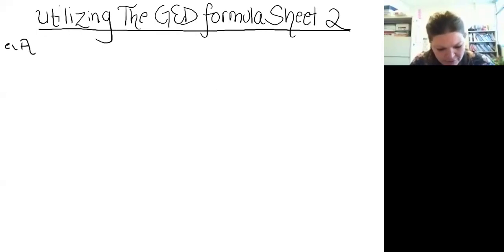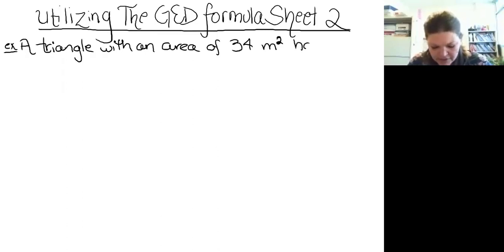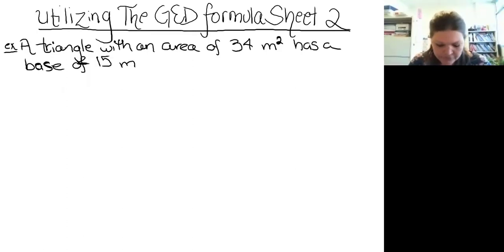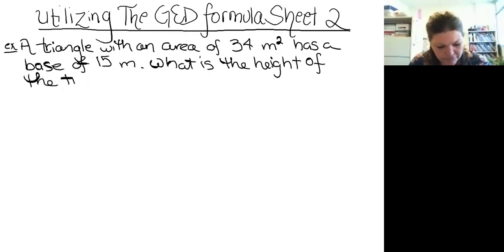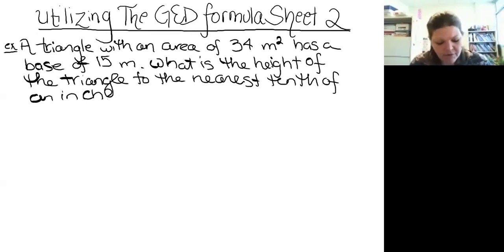GED Example Number One — I'm going to start simpler and get more challenging. A triangle with an area of 34 square meters has a base of 15 meters. What is the height of the triangle to the nearest tenth of an inch?